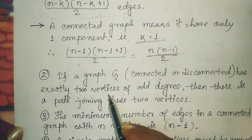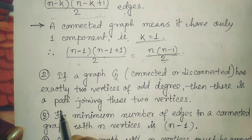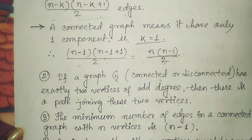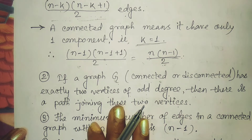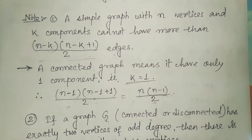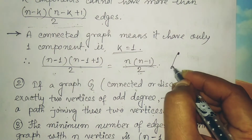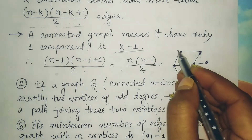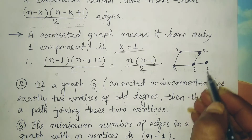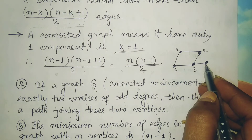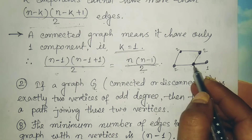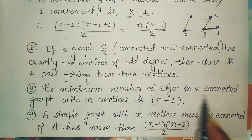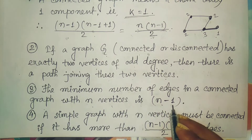Second note: if a graph — connected or disconnected — has exactly two vertices of odd degree, then there is a path joining these two vertices. For example, in a graph where most vertices have degree 2 but two vertices have degree 3 and 1 respectively, there must be a connection between those two odd-degree vertices.